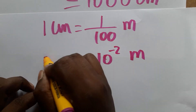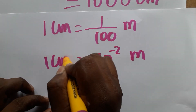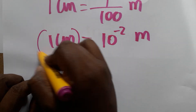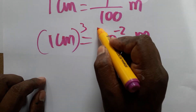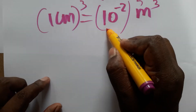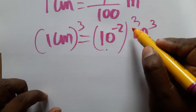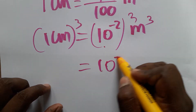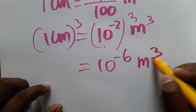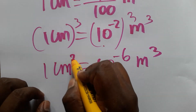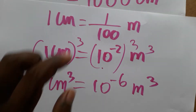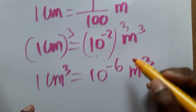We have centimeter cube, so we need to cube the conversion. One centimeter cube means (10 power minus 2) cube, which gives us 10 power minus 6 meter cube. So one centimeter cube equals 10 power minus 6 meter cube.